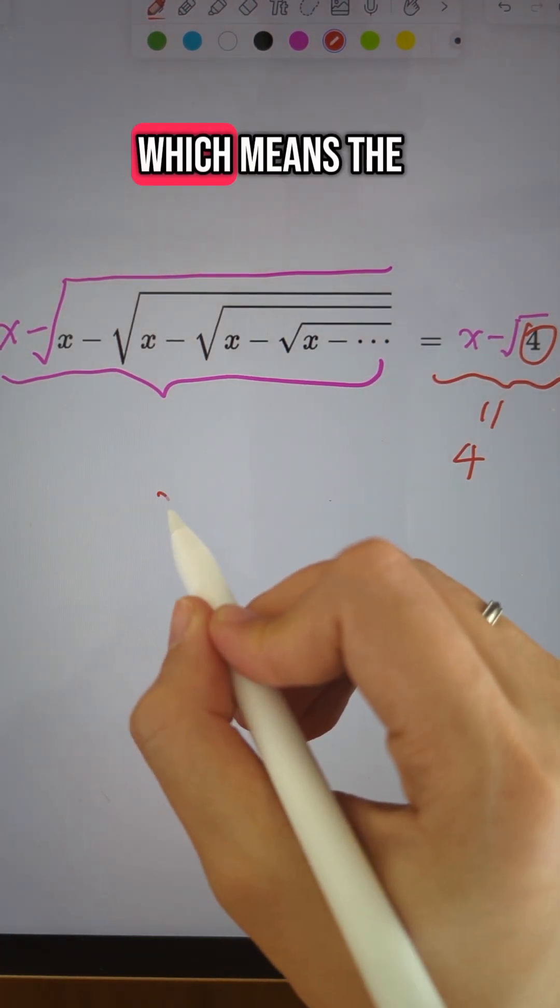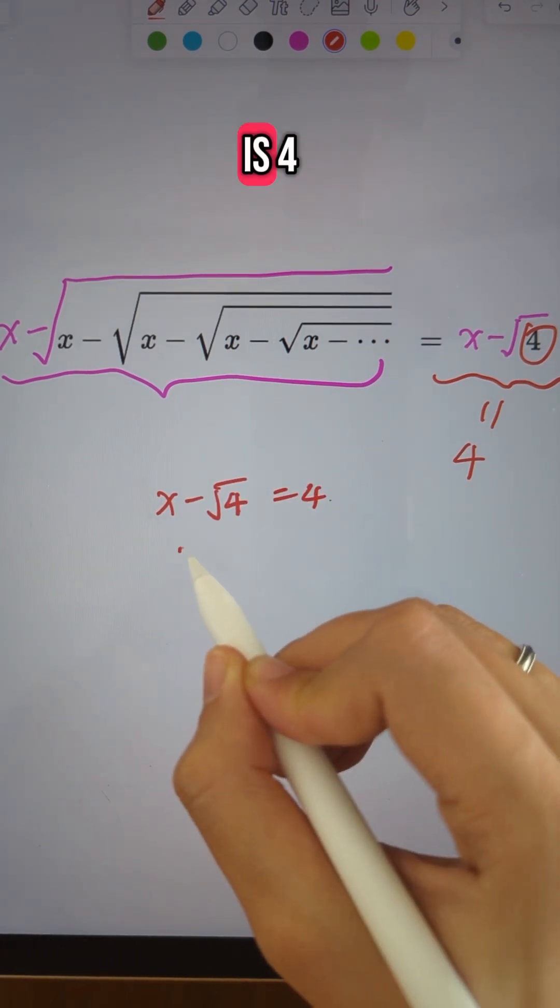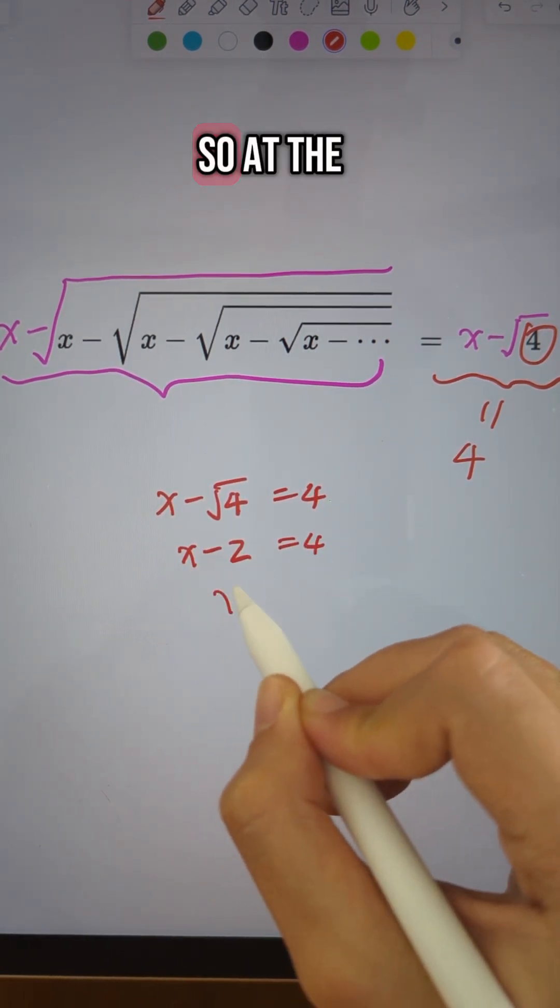So at the end of the day, we're just solving x minus square root of 4 equals 4, which is x minus 2 equals 4, and x equals 6.